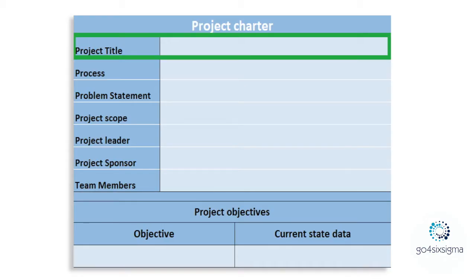The first field is about the project name — what is your project about. If you are not sure what your project title is right now, let's move on and go through the next fields to be updated, and we'll come back to the project title as a last step.